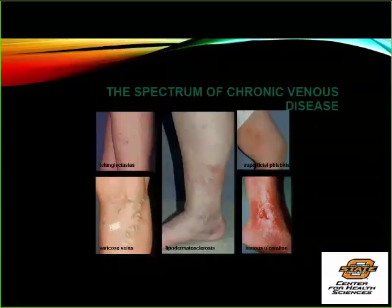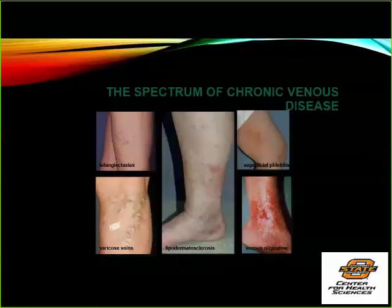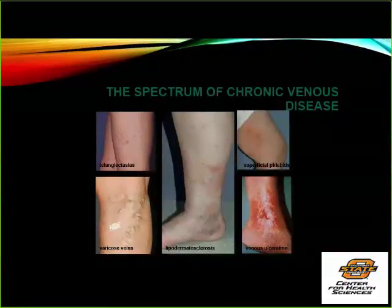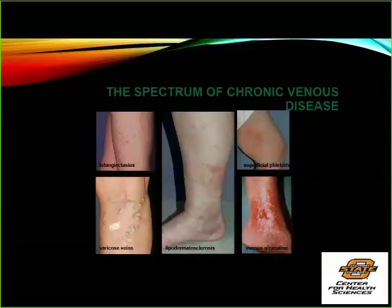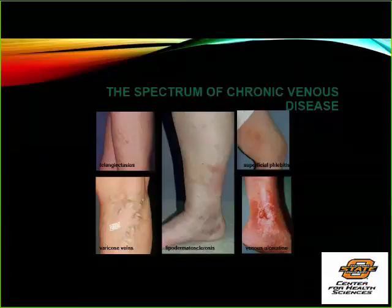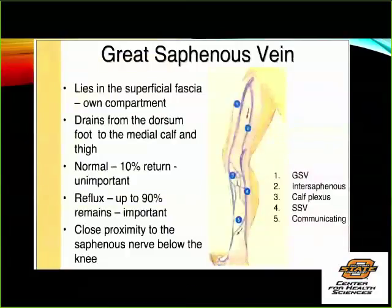People may present with telangiectasias, varicose veins — which by definition are veins greater than three millimeters — reticular veins between one and three millimeters, skin changes, or venous ulcers. They may also have superficial thrombophlebitis. When someone comes in with recurrent superficial thrombophlebitis, think about what that suggests. In recurrent or explosive-onset venous disease, you should possibly think about malignancy. That was Trousseau's original observation — migratory thrombophlebitis and pancreatic cancer is a classic exam question.